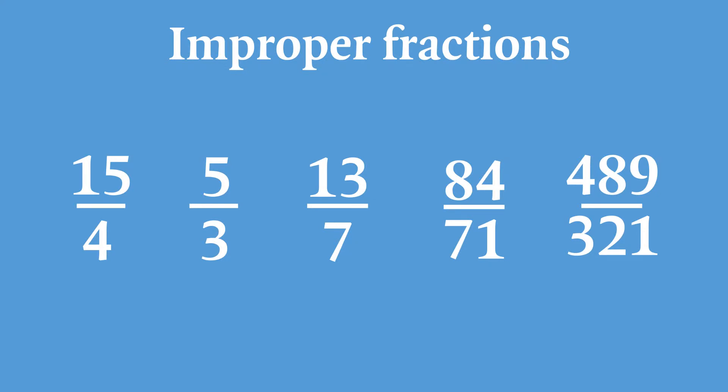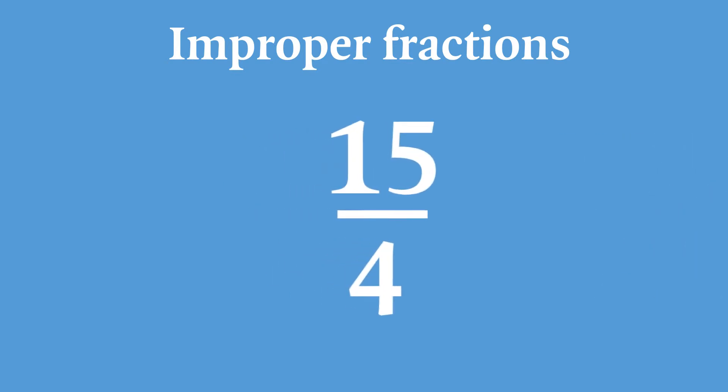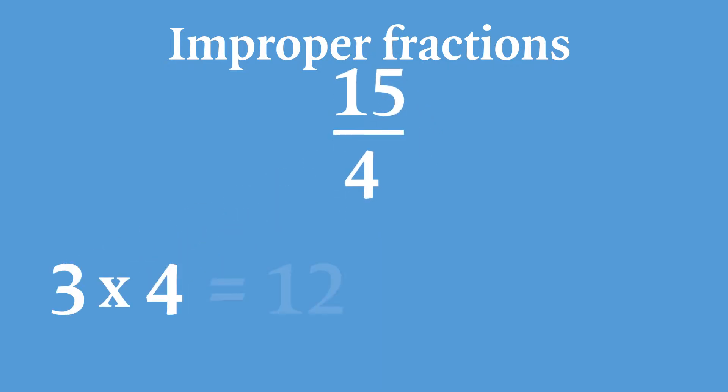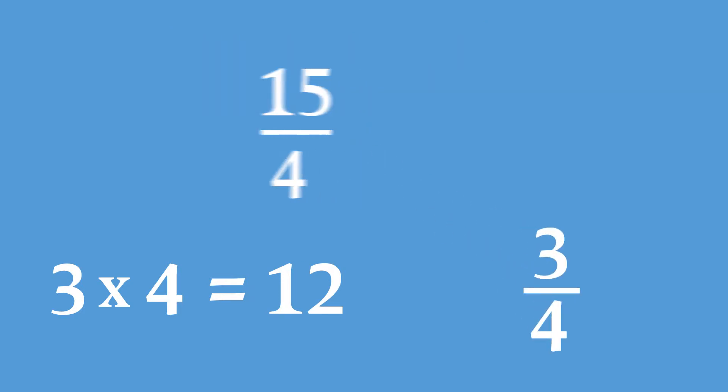Let's take the example of 15 over 4. First we ask, how many 4's are in 15? So there are 3 4's in 15, which makes 12, and there is a remainder of 3. So we write it as 3 and 3 quarters. This is what we call a mixed number.